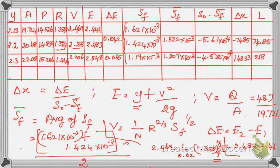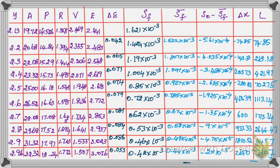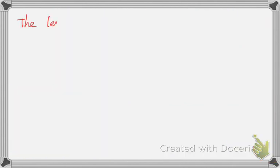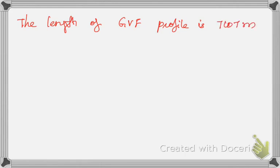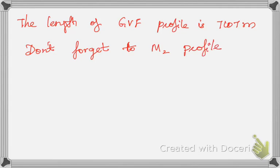Similarly, calculations are completed for all y values from 2.13 up to 2.96 m. The final cumulative length L = 7107 meter. We conclude: the length of the GVF profile is 7107 meter. Also, don't forget to draw the M2 profile curve, as we have identified this as an M2 profile. Thank you, happy learning.